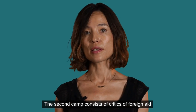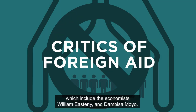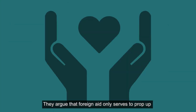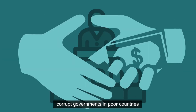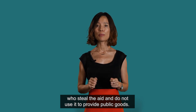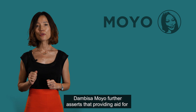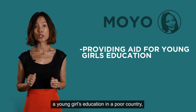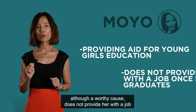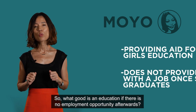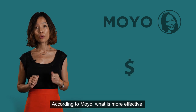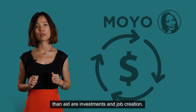The second camp consists of critics of foreign aid, which include the economists William Easterly and Dambisa Moyo. They argue that foreign aid only serves to prop up corrupt governments in poor countries, who steal the aid and do not use it to provide public goods. Moyo further asserts that providing aid for a young girl's education, although a worthy cause, does not provide her with a job once she graduates. According to Moyo, what is more effective than aid are investments and job creation.